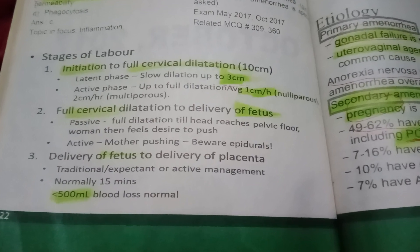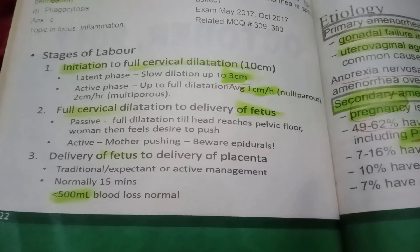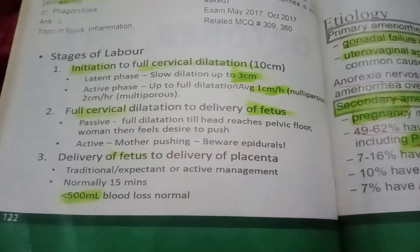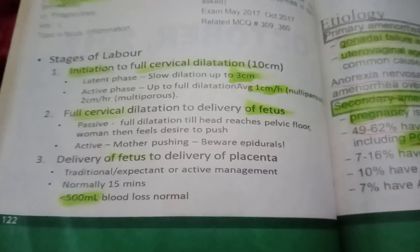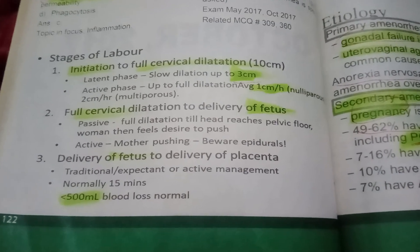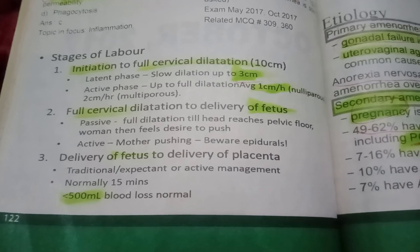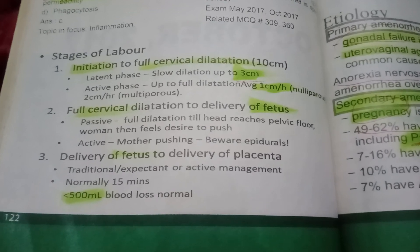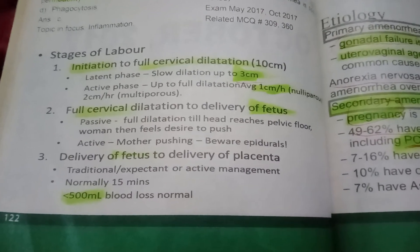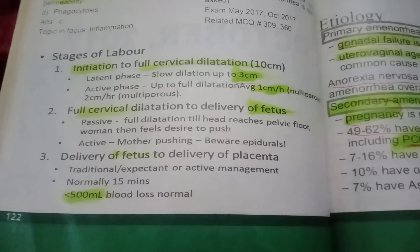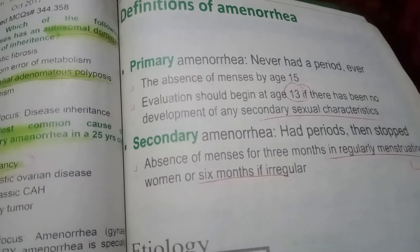After full dilatation, the woman pushes to deliver the fetus, then delivers the placenta — this is the third stage. Expected and active management is normally 15 minutes with less than 500 ml blood loss. These are the normal definitions.